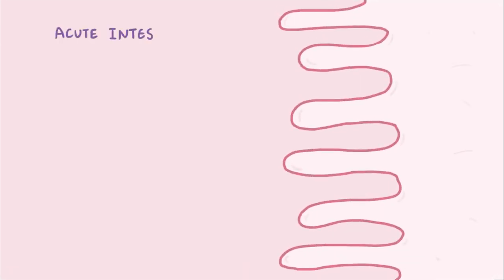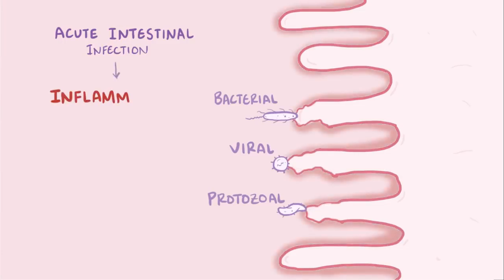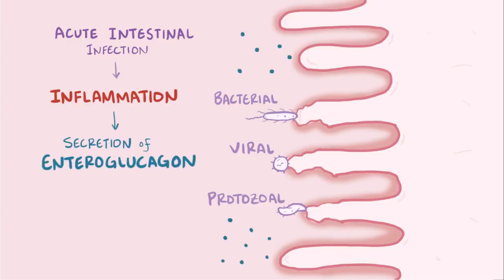The most widely accepted theory is that an acute intestinal infection, which could be bacterial, viral, or protozoal, initially damages the intestinal lining and causes the first bit of inflammation. In response, the intestinal cells secrete enteroglucagon, which is a hormone that decreases intestinal motility.